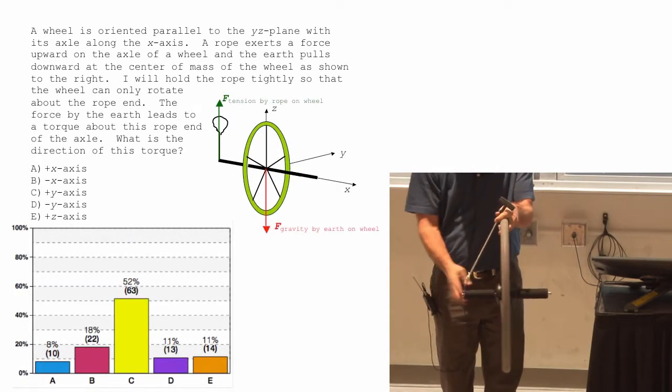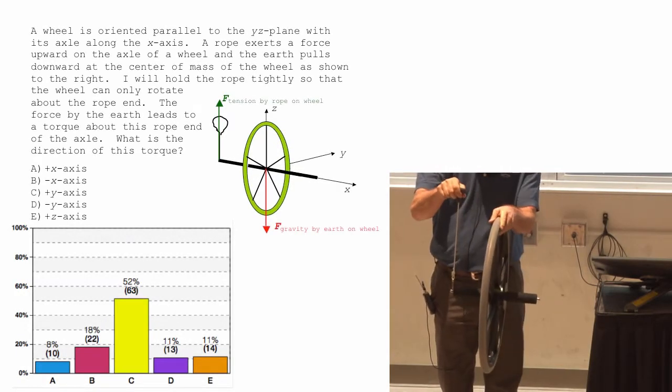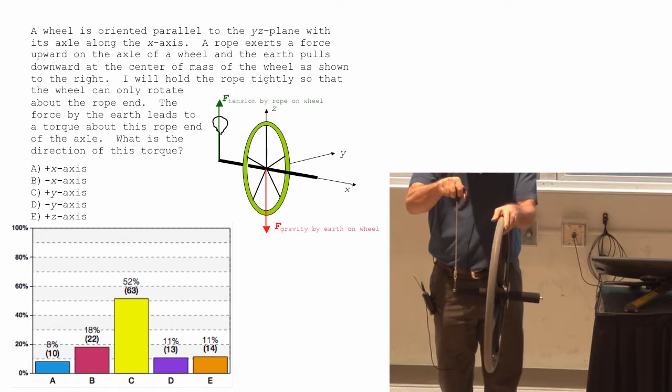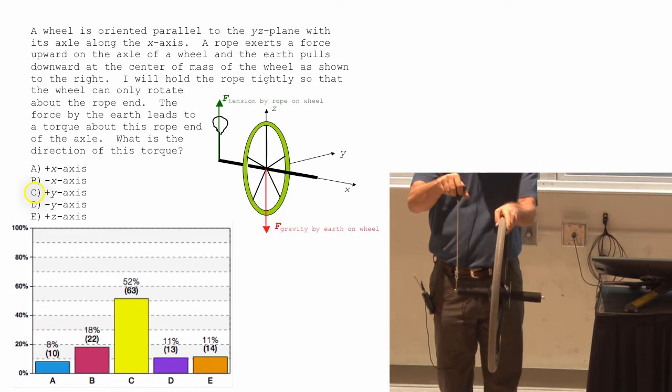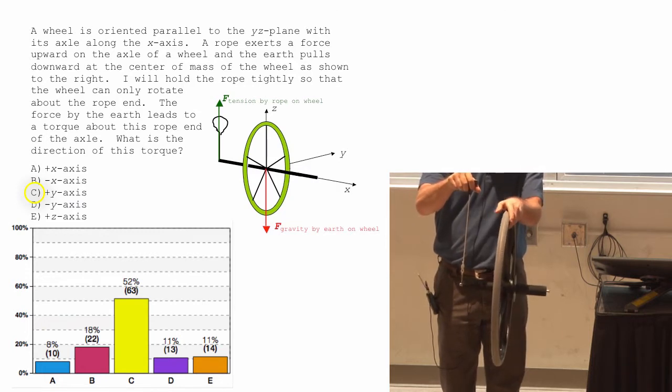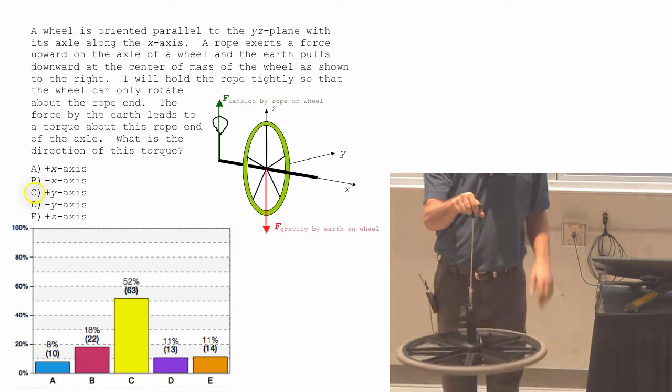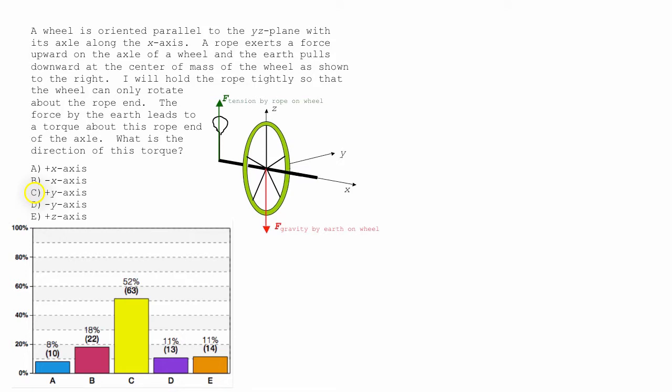So, if I pull up here and the Earth pulls down, it rotates clockwise. Right hand rule would tell you away from you, the way I have it set up right now. And the way I have it drawn, that was meant to be in the positive y direction.